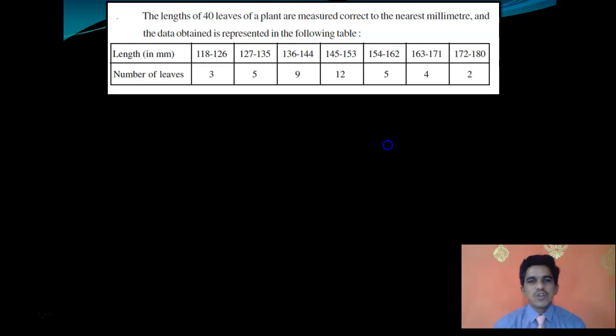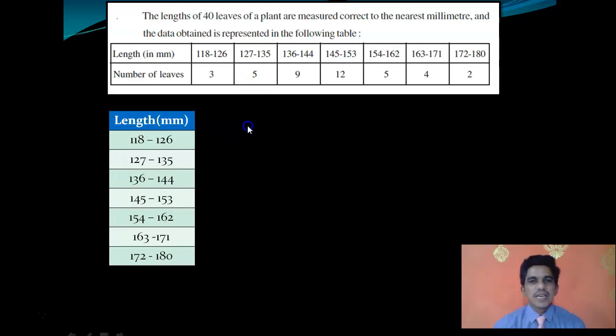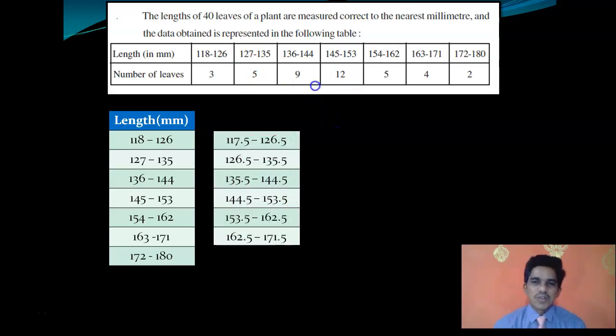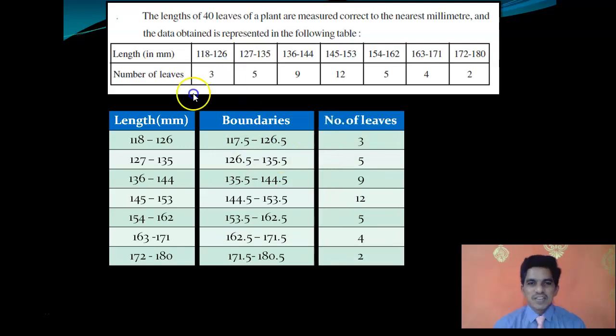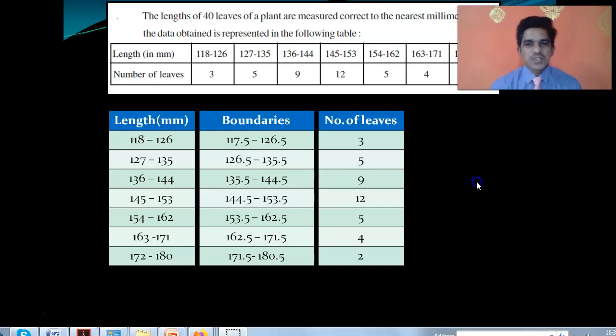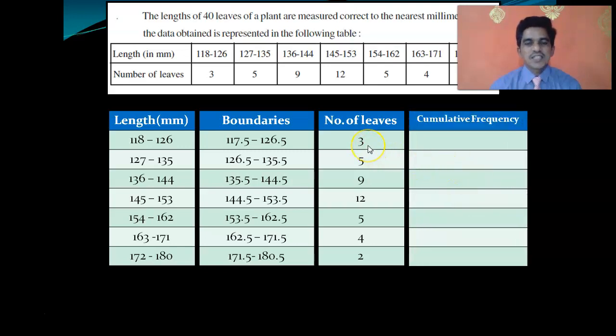First we have to write the length in millimeter. Here we have inclusive classes, so boundaries are needed. Upper limit minus 0.5, lower limit plus 0.5. We have boundaries, then number of leaves. Now for cumulative frequency: first row is 3, second cumulative frequency is 3 plus 5 equals 8.